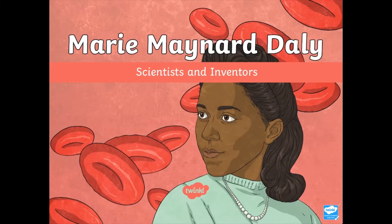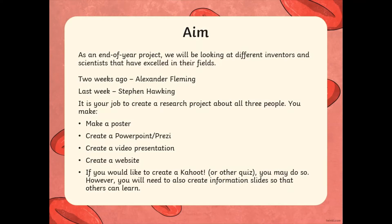Good afternoon Year 6 and welcome to our final scientist we are going to be looking at this project, which is Marie Maynard Daly. We're going to be looking at her because as an end of year project we're going to be looking at different inventors. Two weeks ago we looked at Alexander Fleming and last week we looked at Stephen Hawking. You're going to need to use them too, and the scientist today, to create the research project about all three of these people.